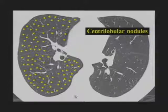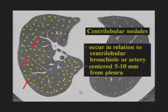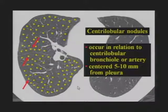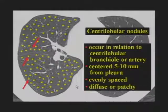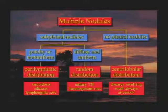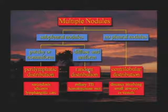The third pattern is centrilobular: nodules occur in relation to the centrilobular bronchiole or artery. The most peripheral nodules adjacent to a fissure or chest wall are about five millimeters from the pleural surface — where the centers of lobules are. Because lobules are about the same size, the centrilobular pattern appears diffuse and uniform. But with this pattern, you do not see nodules at the pleural surface as you do with a random pattern. A quick algorithm: no pleural nodules — centrilobular distribution; subpleural nodules with diffuse and uniform involvement — random pattern (hematogenous disease); subpleural nodules with patchy or non-uniform distribution — perilymphatic (usually sarcoid).